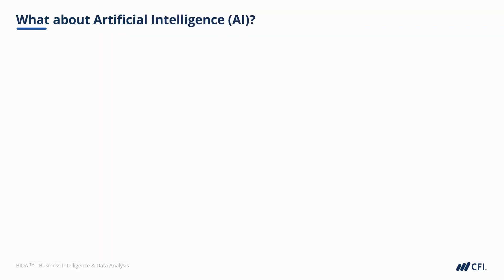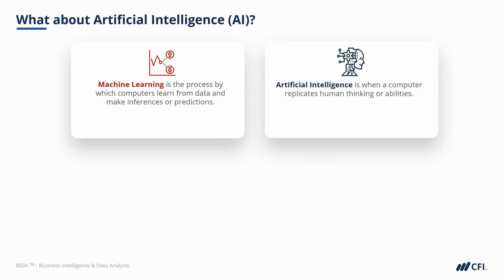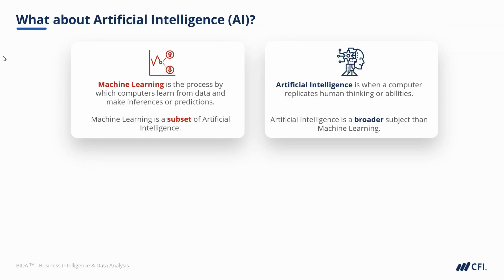Now you know how to define terms like data science and machine learning — but what about artificial intelligence? Isn't that the same thing? Not really, though you will often see the terms used interchangeably. Machine learning is the process by which computers learn from data and make inferences or predictions. Artificial intelligence is when a computer replicates human thinking or abilities. Machine learning is really a subset of artificial intelligence, which is capable of many other tasks and is a much broader subject.